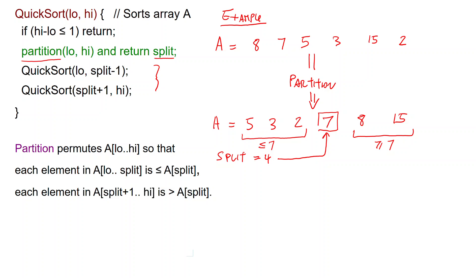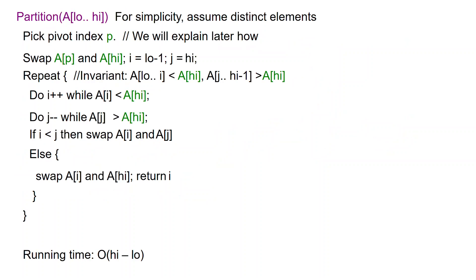Let us now see the pseudocode for the function partition. For simplicity, we are going to assume that the array contains distinct elements. It is not hard to modify the pseudocode to take into account that some elements are duplicated. The first thing that we do is to pick a pivot index, p.